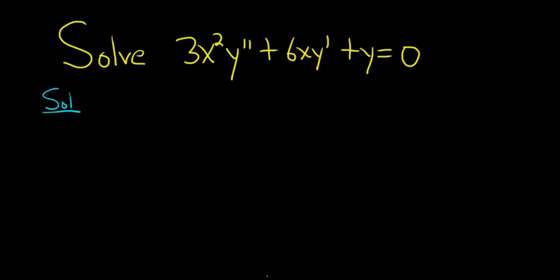This is a Cauchy-Euler differential equation because the power of x matches the order of the derivative. The power of x matches the order of the derivative. And here you can think of it as x to the 0, y. So the power of x matches the order of the derivative. You can think of y as being the 0th derivative.